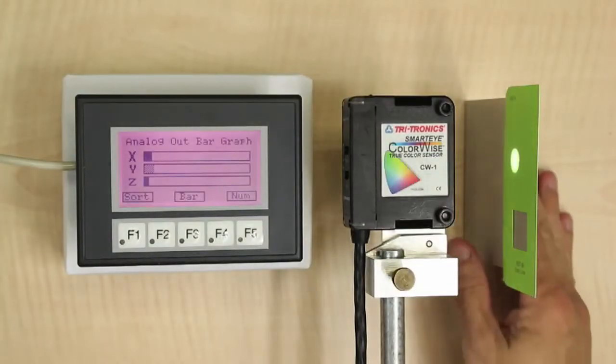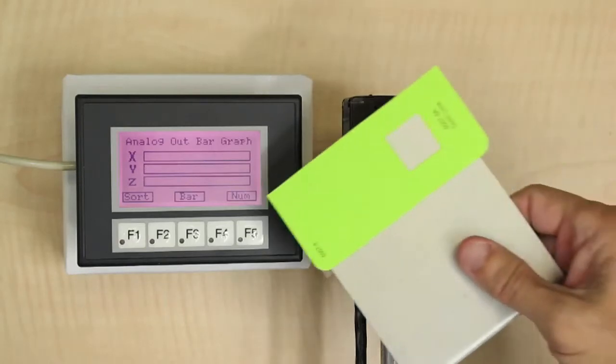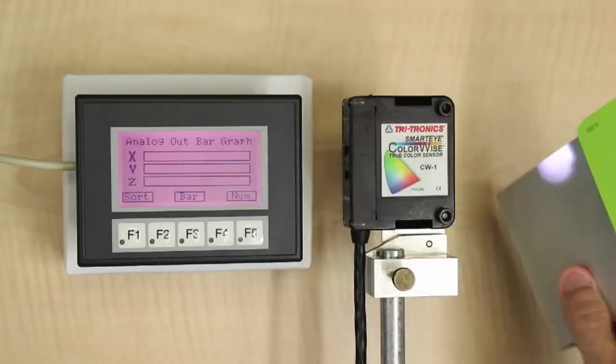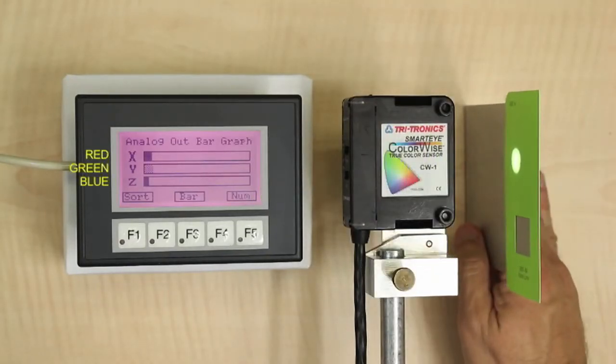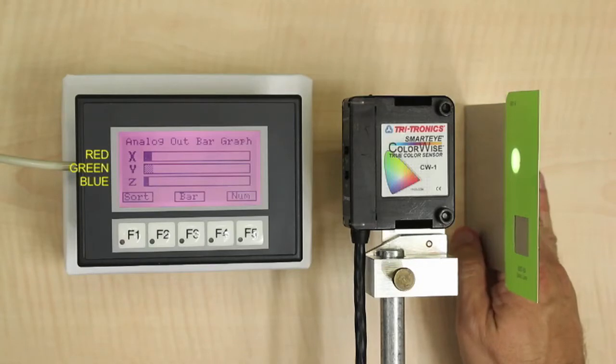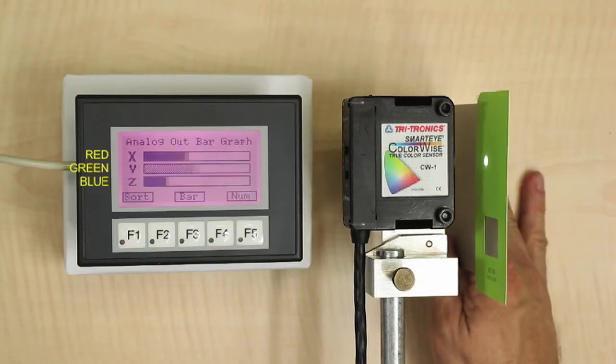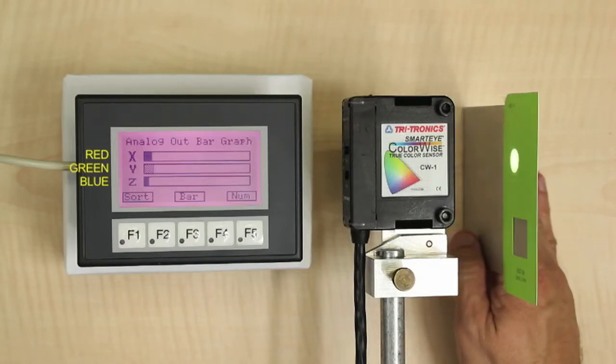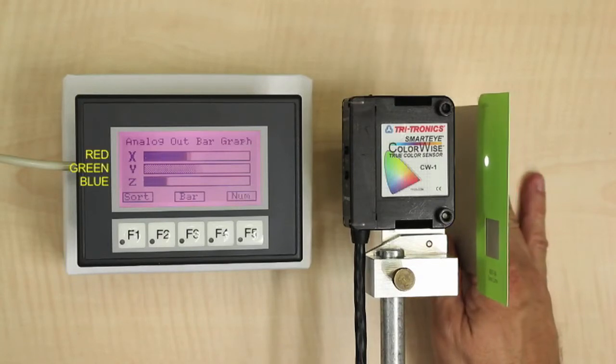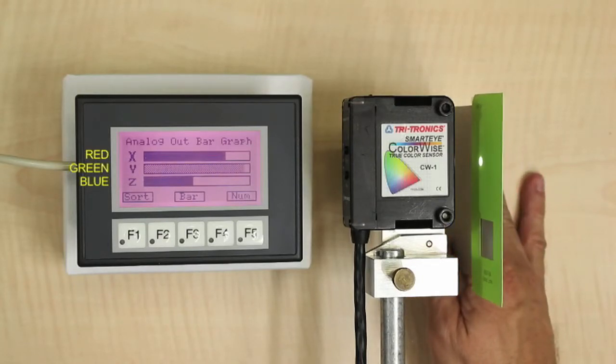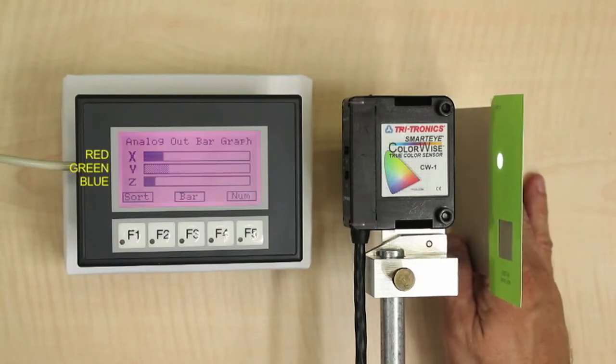When using the XYZ type output, it is the ratio of red to green to blue that describes a specific color. The actual magnitude of the RGB or XYZ output signals will change with the intensity of the signal returned off the target object. As the target position varies, all of the signals will rise and fall together, but should maintain their respective ratios to each other.